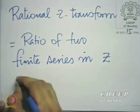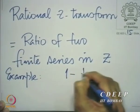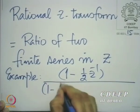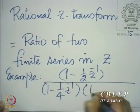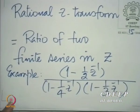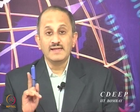The rational Z-transform is a Z-transform which is a ratio of two finite series in Z. An example is: (1 − ½ z⁻¹) divided by (1 − ¼ z⁻¹)(1 − ⅓ z⁻¹). I must always emphasize that a Z-transform has associated with it a region of convergence. The Z-transform is always an expression with a region of convergence — it is incomplete without either.